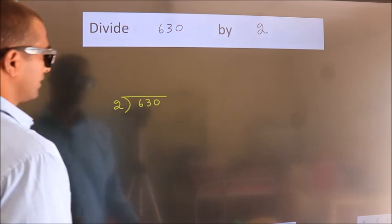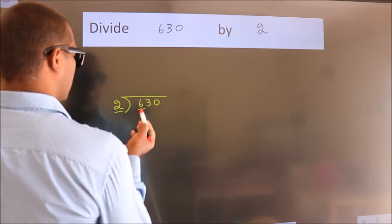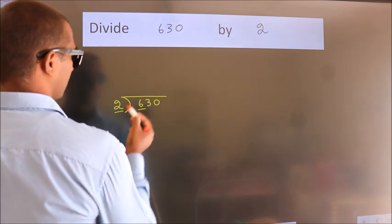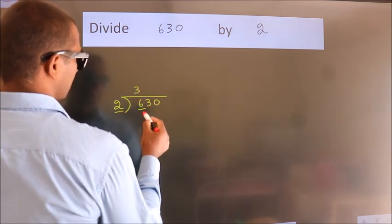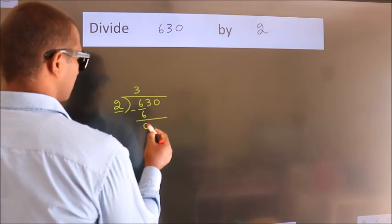Next. Here we have 6, here 2. When do we get 6? In 2 table, 2 3s, 6. Now we should subtract. We get 0.